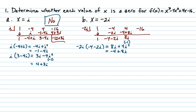So let's multiply negative 2i times 8i. You get negative 16i squared. But i squared is negative 1. So this is going to be a positive 16. And so notice here you do get a remainder of 0. So the answer here is yes.